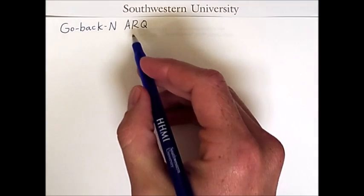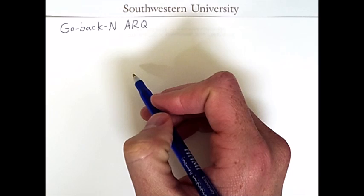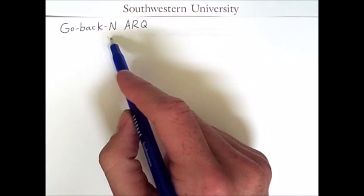There are two prominent automatic repeat request schemes associated with sliding window flow control and the first of these is go back N.